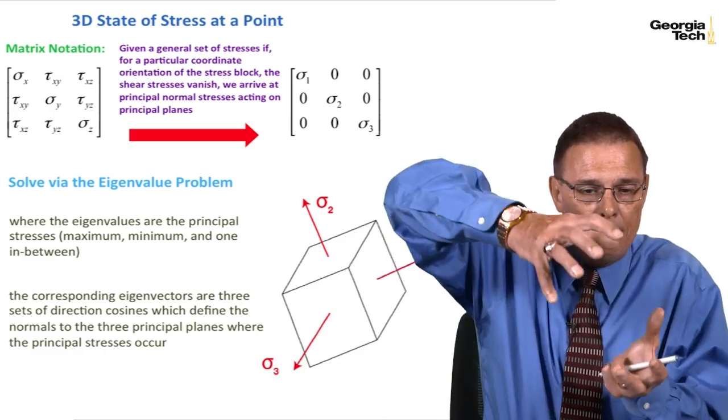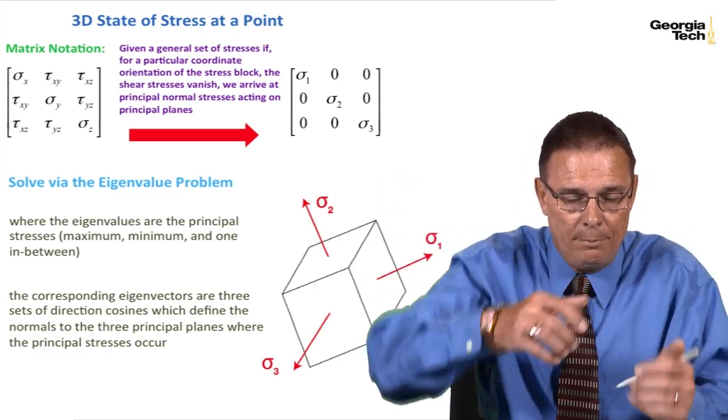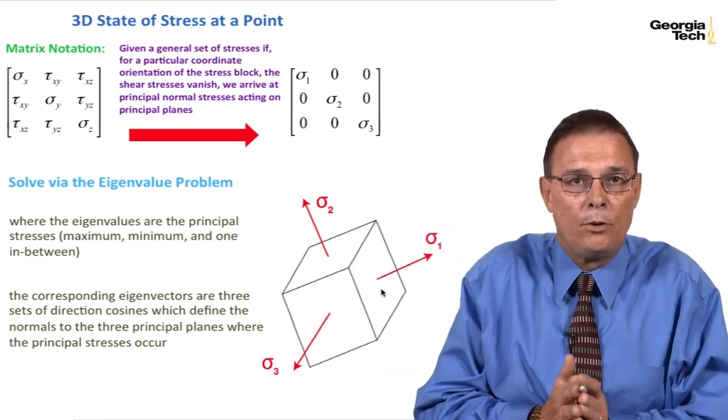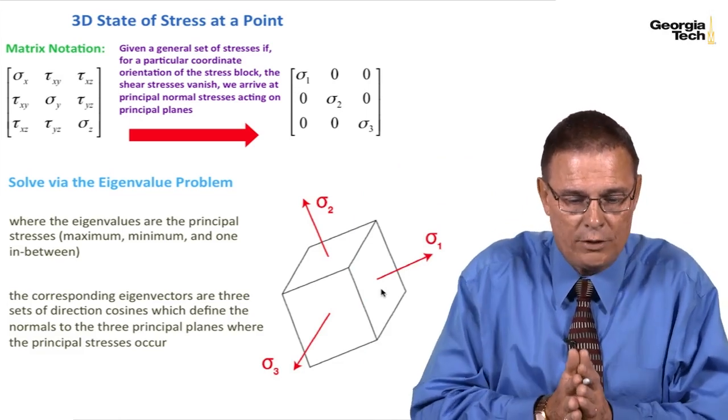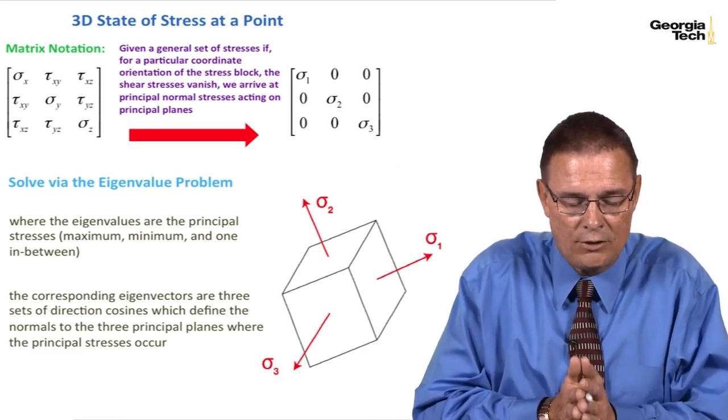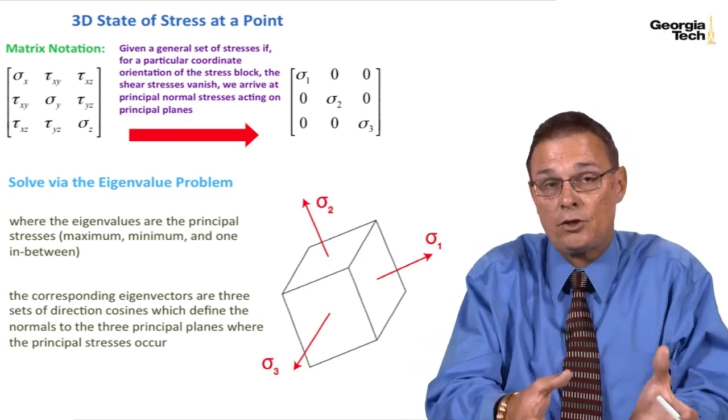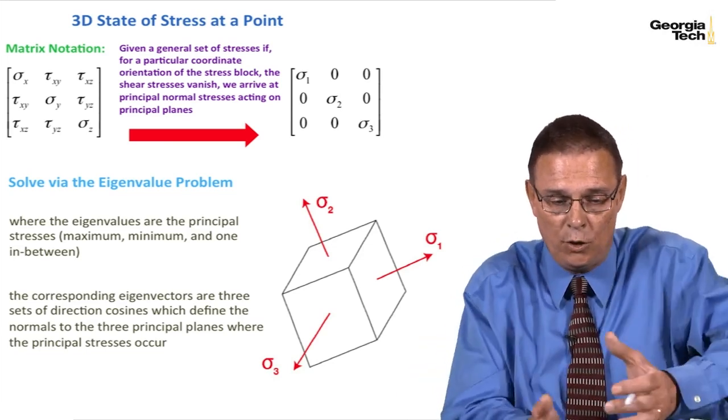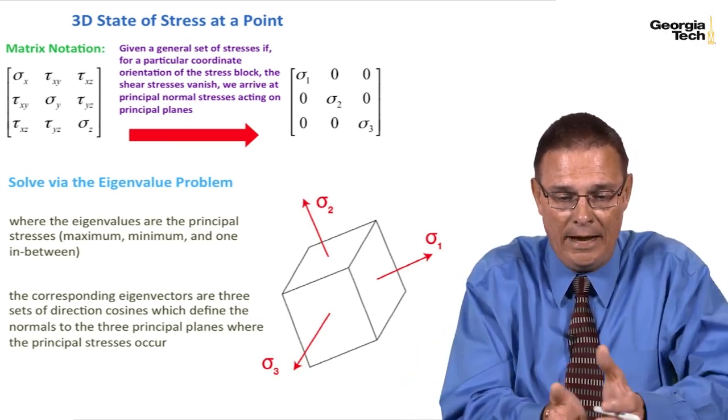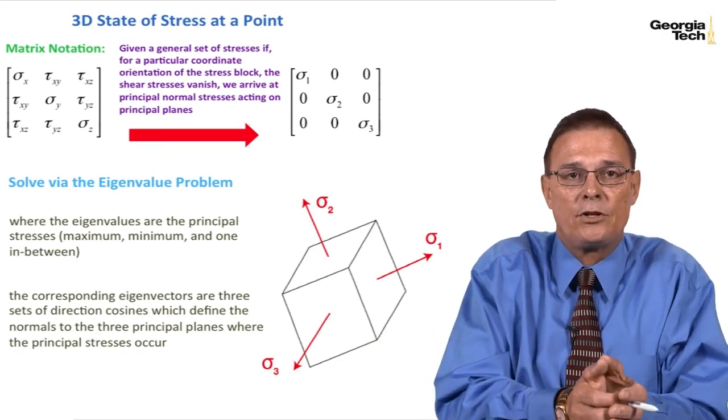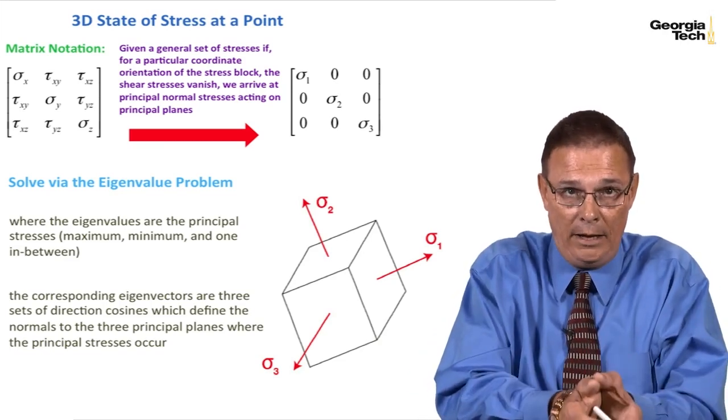And so I can orient my block in such a manner that I get three principal stresses, no shear stresses on those faces. And so now we can see from my first slide in this module that you can orient the block in any direction and completely describe the state of stress at a point for three dimensions using just a cube with three orthogonal faces.